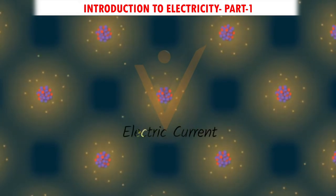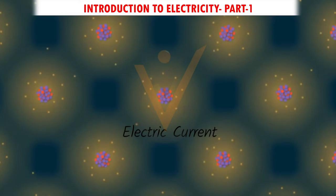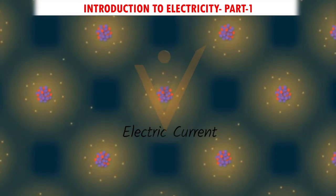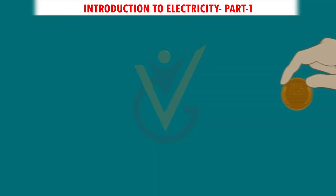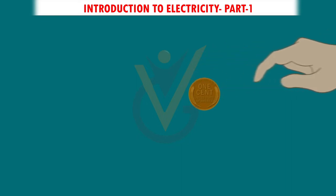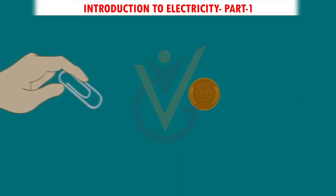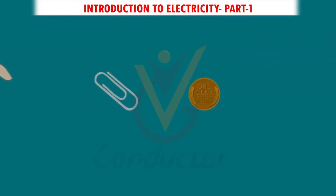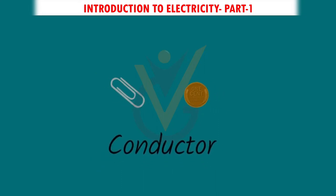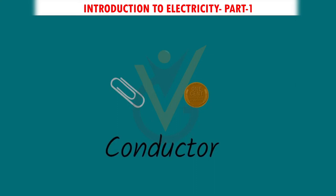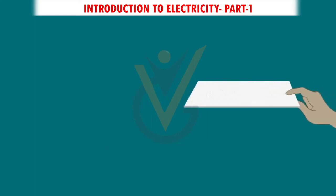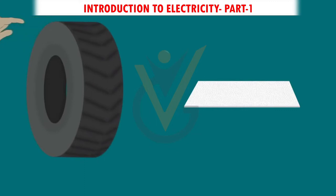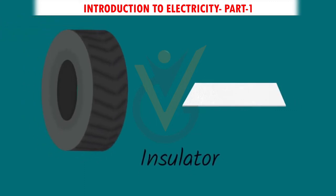Electrons can move in all materials, but they can move through some materials better than others. If electrons can move quickly and easily in a material, that material is a conductor — anything that allows electric current to flow from one point to another. The opposite of a conductor is an insulator, a material that does not let electrons move well and doesn't conduct electricity.